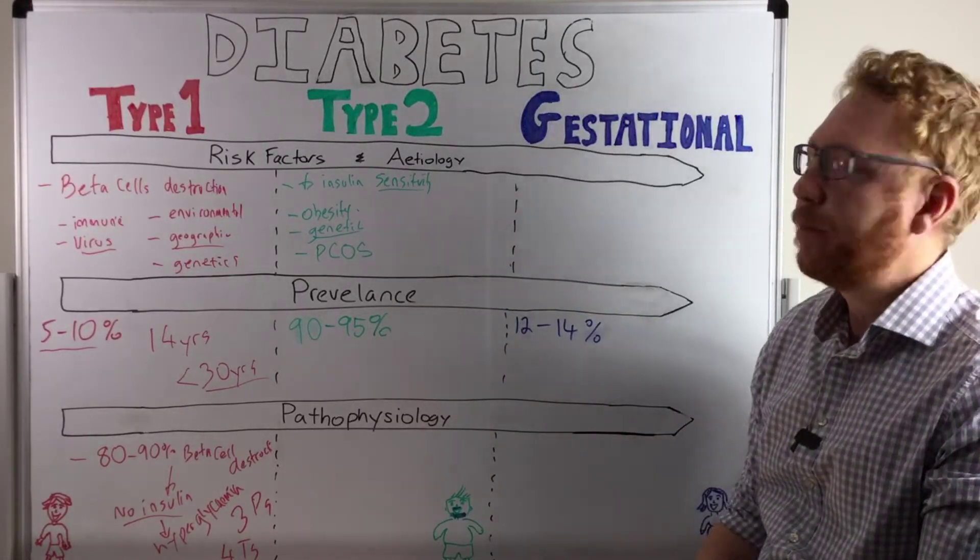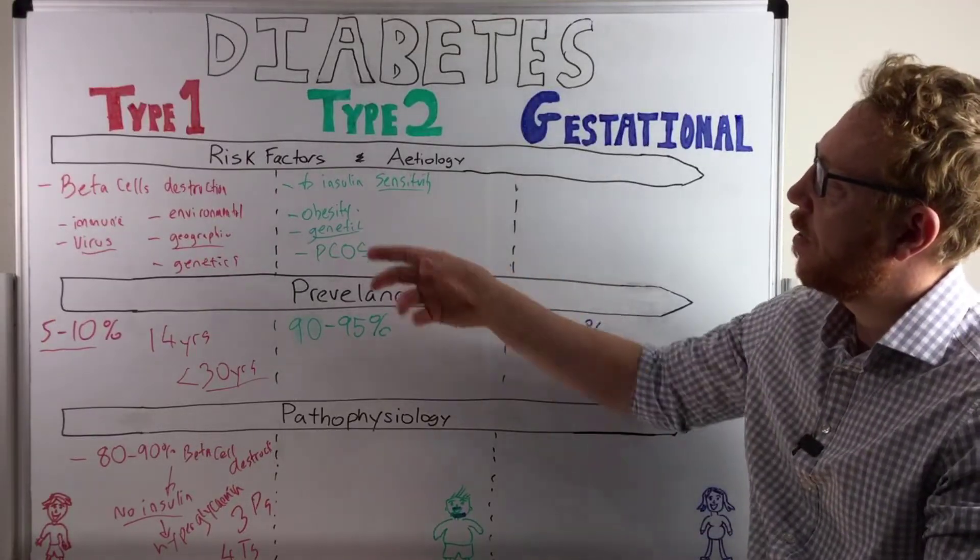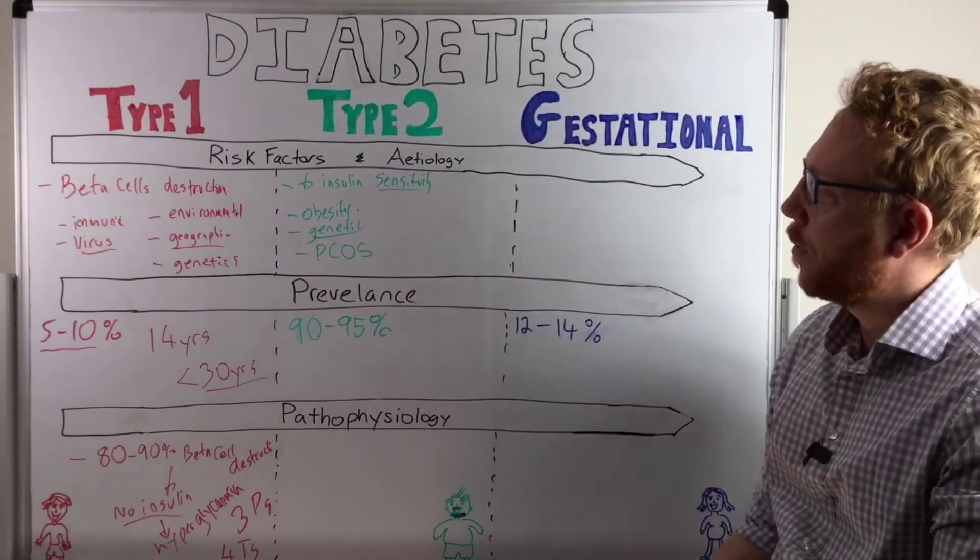Other things that may increase the likelihood of a person with it would be polycystic ovary syndrome. That seems to also predispose one to a decrease in sensitivity to insulin. Another thing you might have heard of is metabolic syndrome, but that's a combination of a number of conditions like obesity, hypertension, hyperlipidemia, which is increasing the likelihood of this type of diabetes.